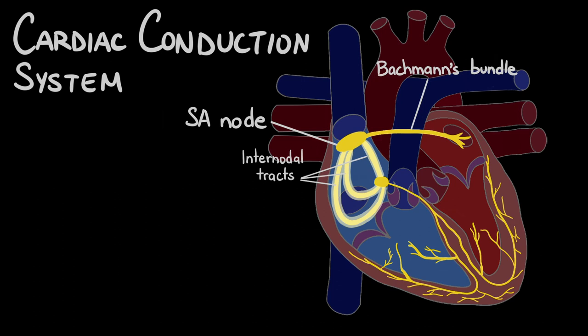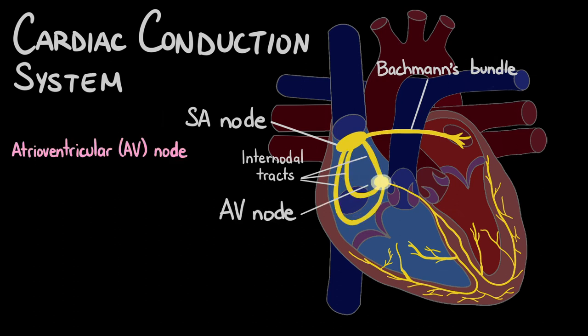The electrical impulses then reach the atrioventricular node, which is located right here at the junction between the atria and the ventricles. The AV node acts as a sort of gatekeeper to delay the transmission of the action potential from the atria to the ventricles for a fraction of a second.